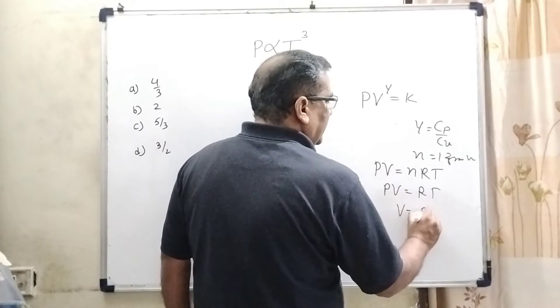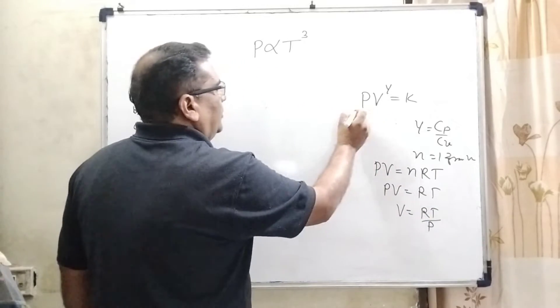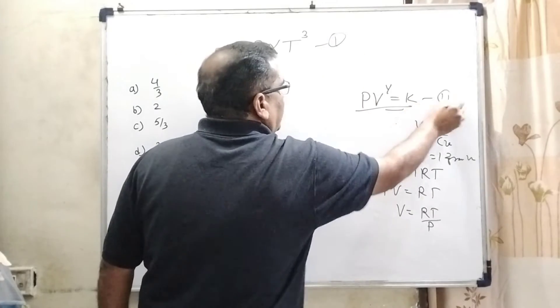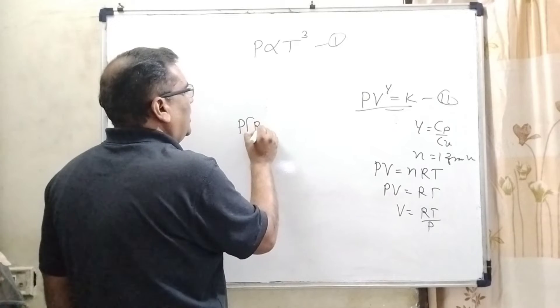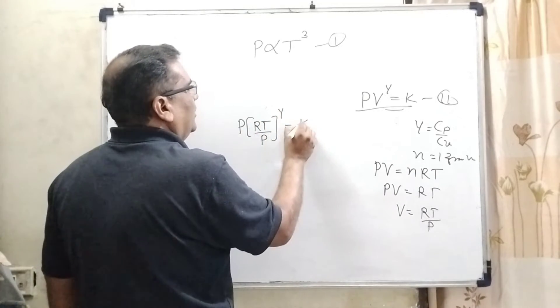Then volume can be written as RT by P. So substitute this value in this condition. Now P in the place of V, we have substitute RT upon P raised to the power gamma equal to K.